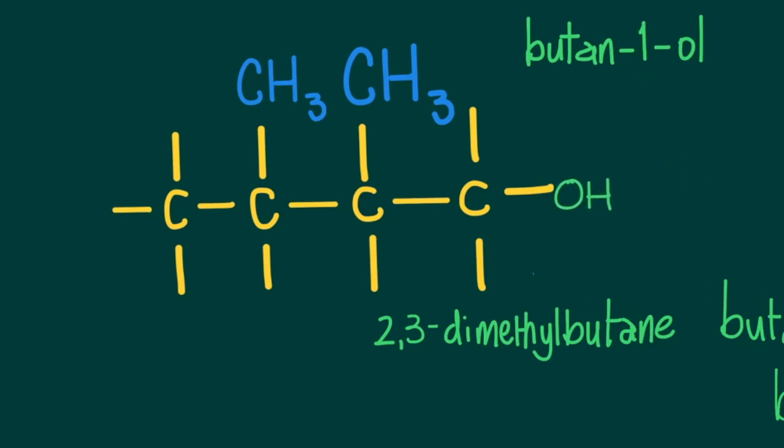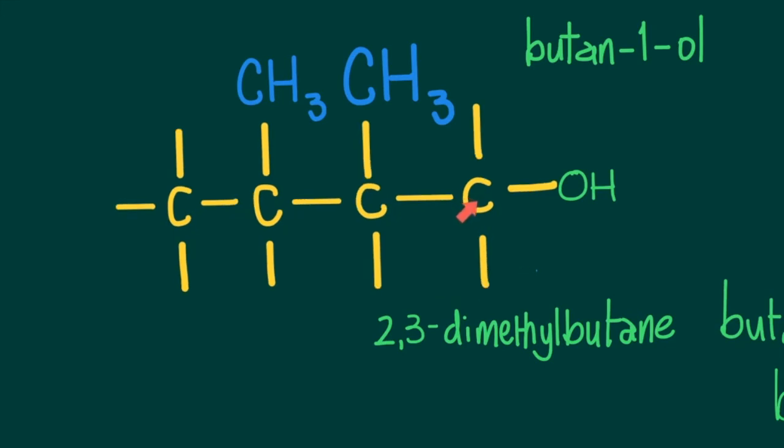And finally, what about if we were to now add an OH group? Then the functional group would have to take precedence in the numbering system. And in keeping with that, then this would have to become carbon one. So with this becoming carbon one, then this structure would become 2,3-dimethylbutan-1-ol.